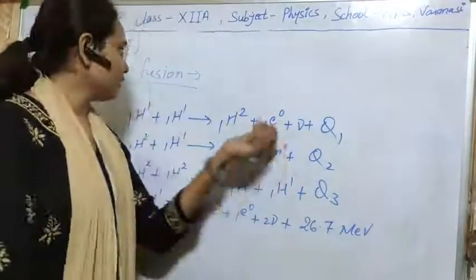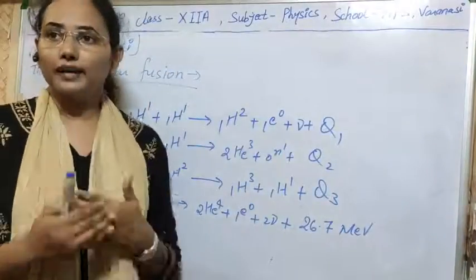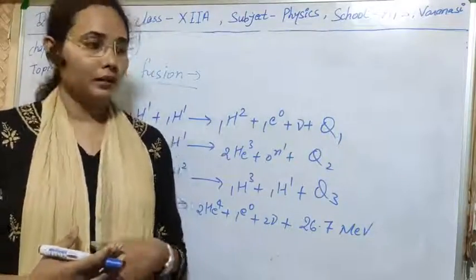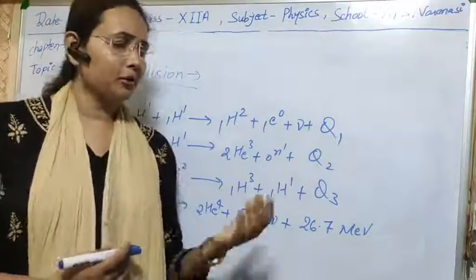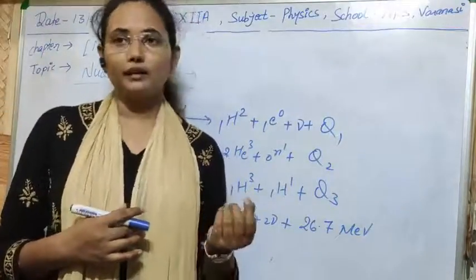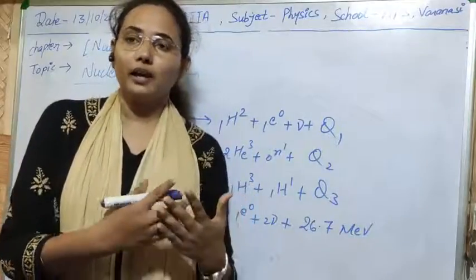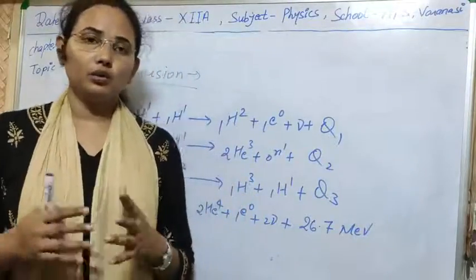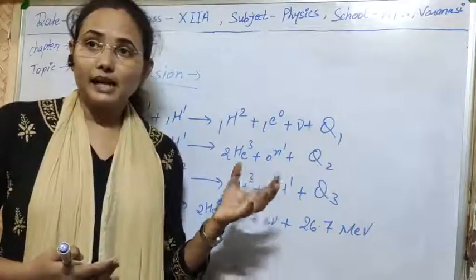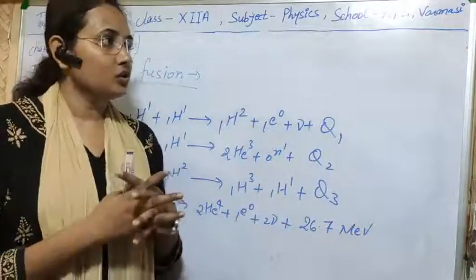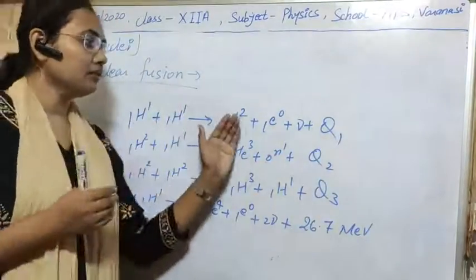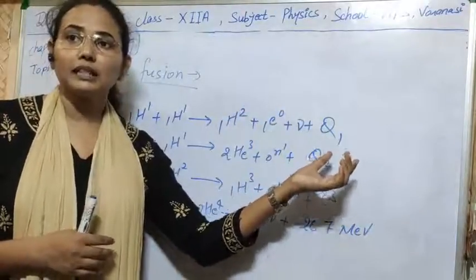The next topic is nuclear fusion. To attain stability, nucleus follows both types of processes: first is nuclear fission — process of splitting of nucleus — and second is process of joining of nucleus. In the process of splitting, we use some high-energetic particle to bombard on the nucleus, and due to bombardment it splits into two or more particles with emission of a huge amount of energy. In nuclear fusion, two or more nuclei are joined together and a large amount of energy is also emitted.